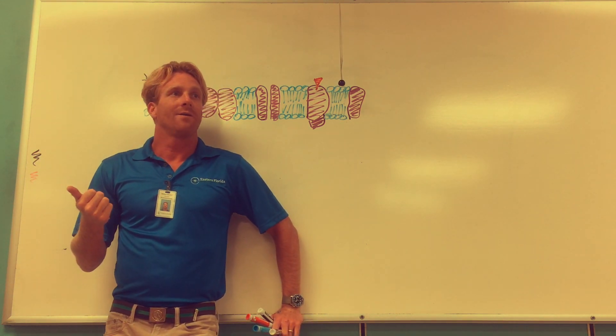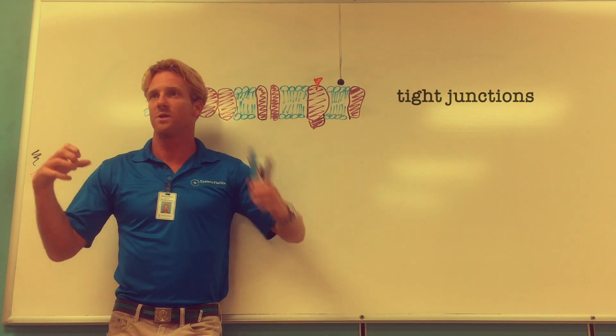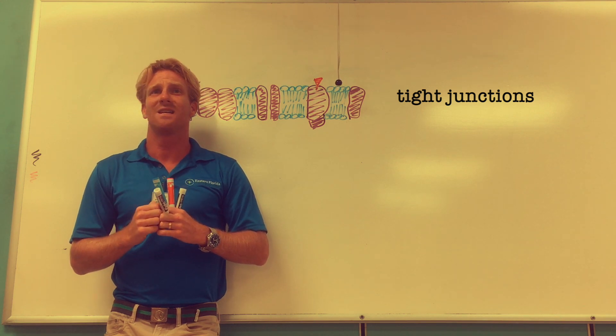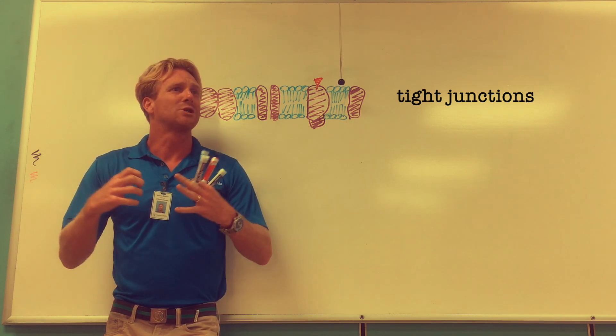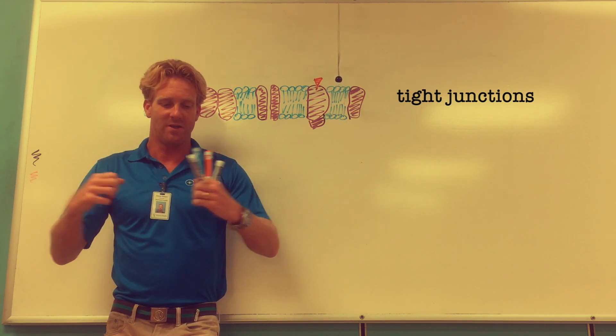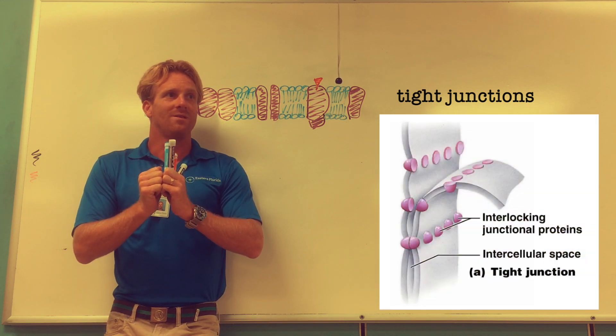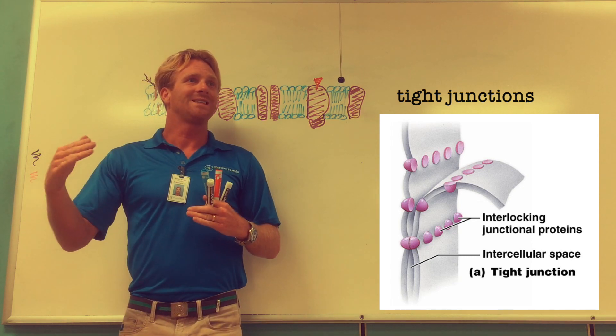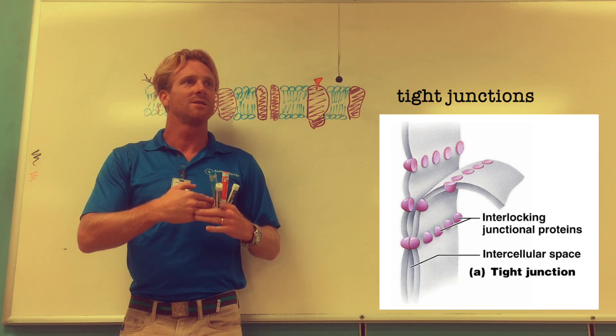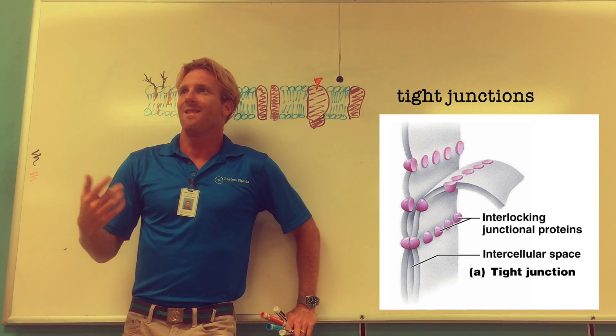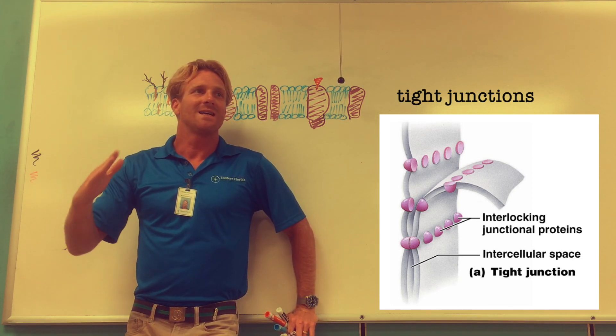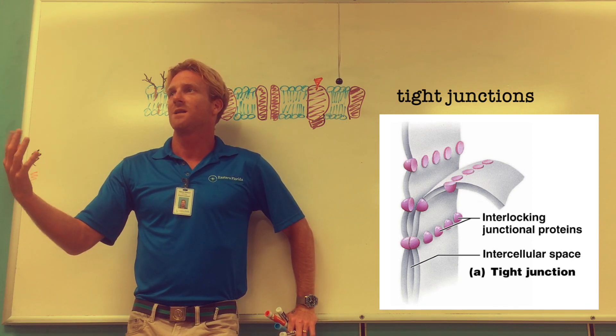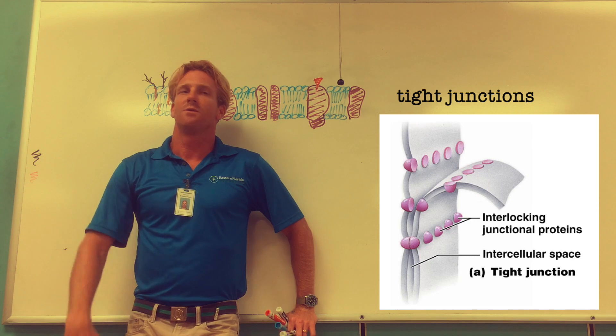One category are called tight junctions. This is when two neighboring cells are anchored together. Think of these as superglue or a staple where you have two cells that are stapled together. These tight junctions are typically waterproof and impermeable so things can't sneak between those two cells. You'll find these tight junctions in the epithelium that lines our intestine so that the nasty things in our colon or large intestine, those bacteria, aren't able to cross over into our body cavity.